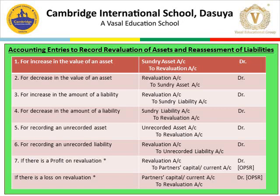Case two: for decrease in the value of assets. When assets value is decreasing it is a loss, so revaluation account is debited. The entry is revaluation account debit to sundry assets account. Case three: for increase in the amount of liability — also a loss — so revaluation account is debited to sundry liabilities account. As per the modern rule, increase in liabilities is credited.